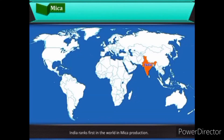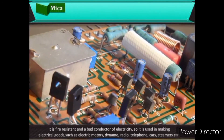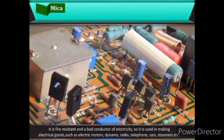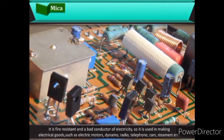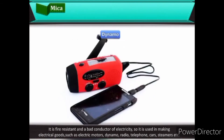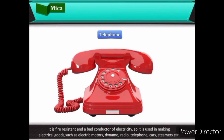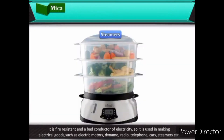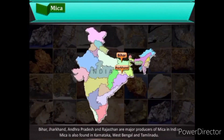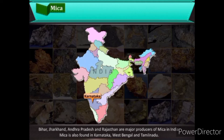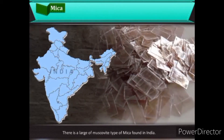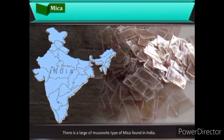India ranks first in the world in mica production. Mica is fire-resistant and a bad conductor of electricity, so it is used in making electrical goods such as electric motors, dynamos, radio, telephone, cars, steamers, etc. Bihar, Jharkhand, Andhra Pradesh, and Rajasthan are major mica-producing states. Mica is also found in Karnataka, West Bengal, and Tamil Nadu. A large amount of muscovite type of mica is found in India.